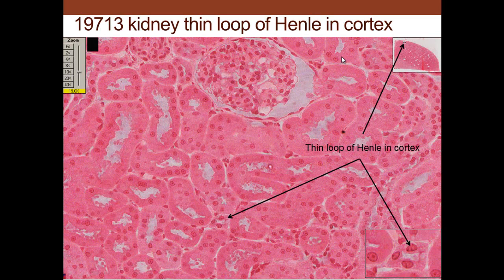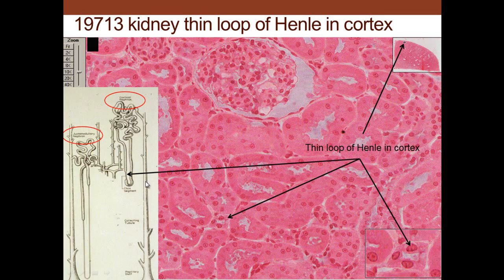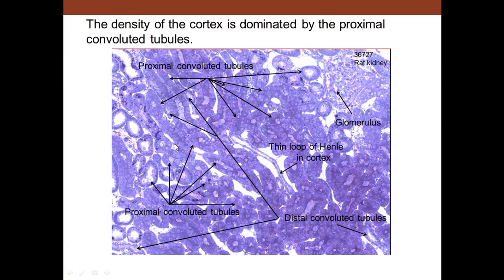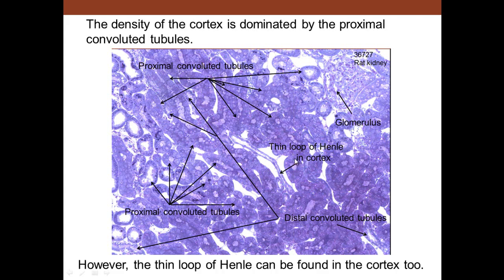If you were an animal that lived in a desert, you would probably have more juxtamedullary nephrons than animals that do not live in an arid environment. In the cortex, you can find some thin portions of the loop of Henle. This thin portion of the loop of Henle is not found too often because it's very short compared to the long loop that reaches down into the medulla. These are the corticonephrons versus the juxtamedullary nephrons. You have a high density of proximal convoluted tubules, a few distal tubules, and there's the glomerulus.